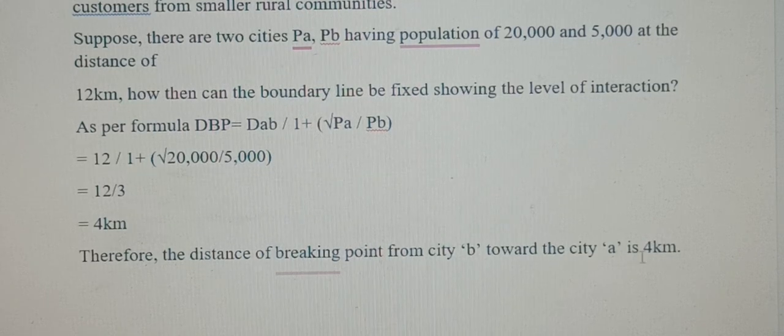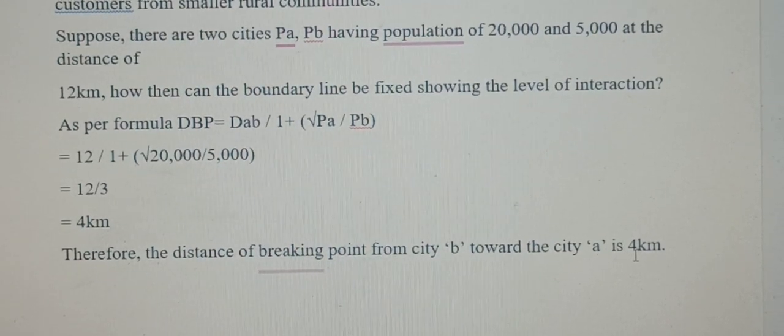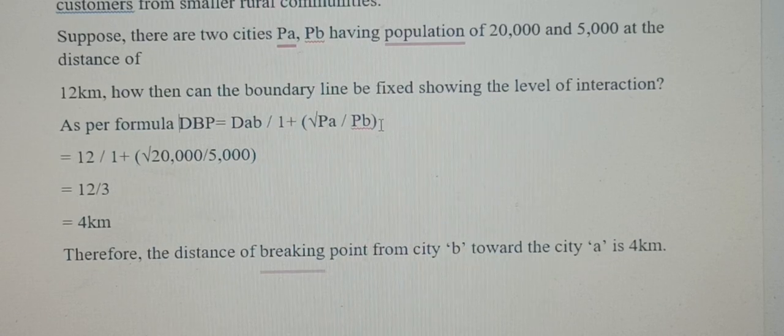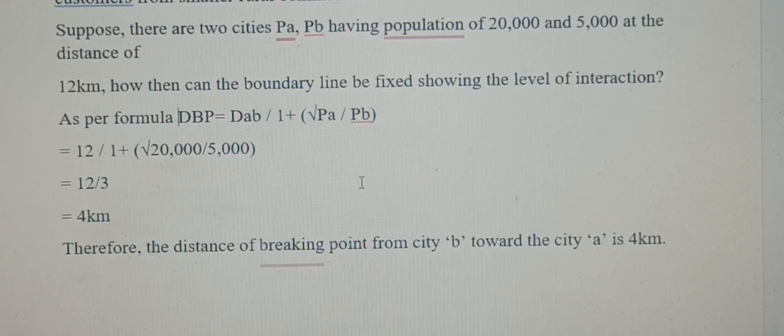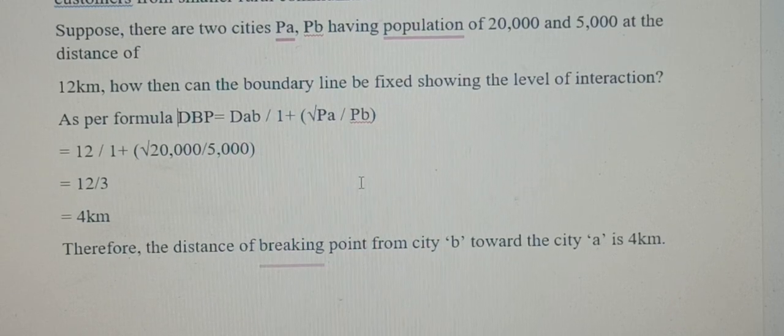The breaking point from city B towards city A is 4 km. If I convert this formula by writing it as Pb by Pa, then my breaking point will certainly come from city A. This is a vice versa relation.